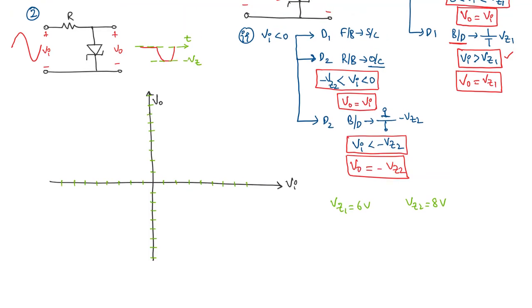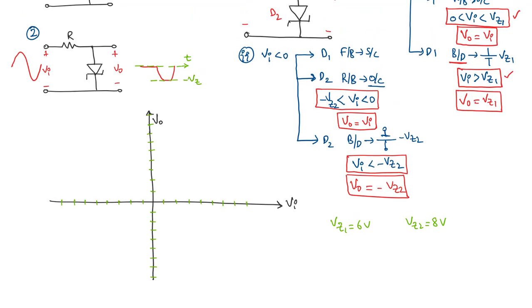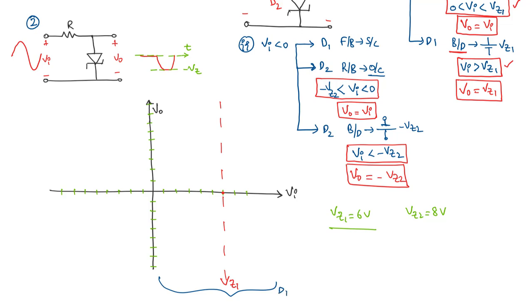When VI is positive, D1 is in action because it is in reverse bias. This is divided into two segments: VI between 0 and VZ1 — since VZ1 is 6 volts, that point is at 6 volts on the transfer characteristic — in this region D1 acts on the input while D2 is simply short circuit as it is forward biased, and D1 is in reverse bias or enters breakdown.